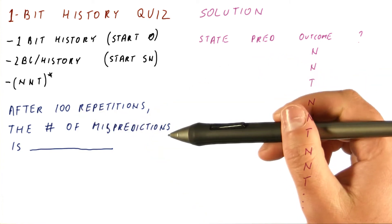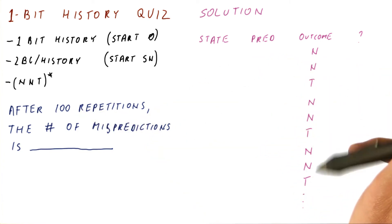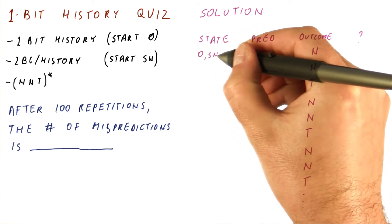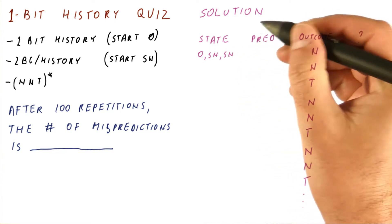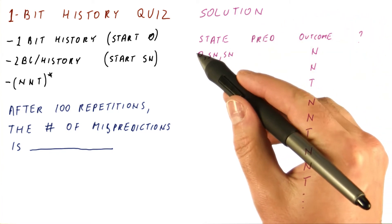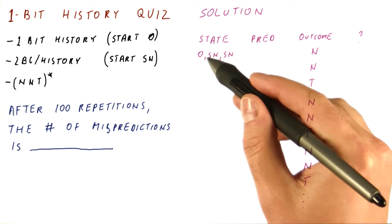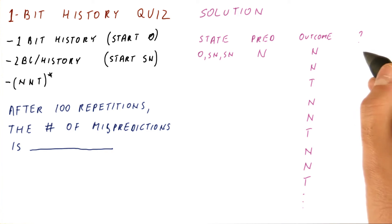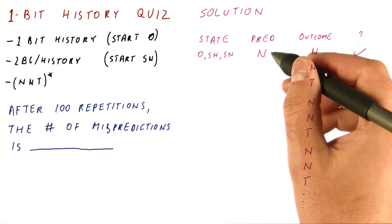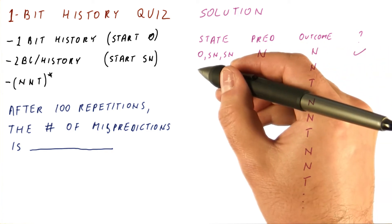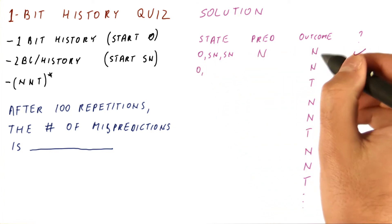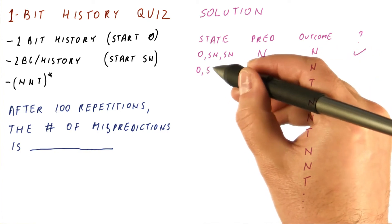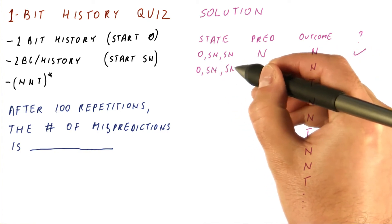Pretty soon the predictor will start to be very consistent about what it's predicting in each round of the pattern. The state initially is zero, strong not taken, strong not taken. The prediction, using the zeroth counter which says strong not taken, will be not taken. This agrees with the outcome, so we are correct. The state stays zero, strong not taken stays strong not taken after the not taken outcome, and the other counter stays the same.